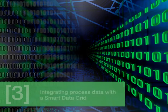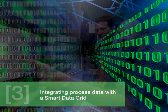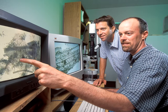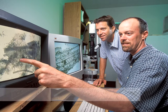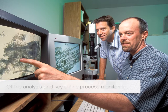Section 3: Integrating Process Data with a Smart Data Grid. A key to operating biogas plants efficiently is to base operation decisions on all available parameters from both necessary offline analysis and key online process monitoring.